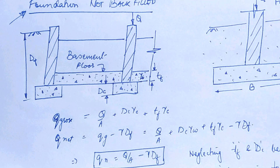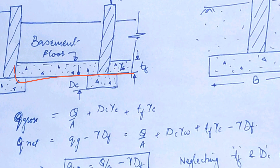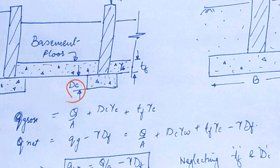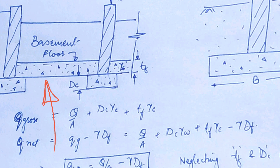Q_gross here is equal to the total load Q acting over area A, plus DC·γC — the weight of the concrete bed, where DC is the depth of the concrete bed footing and γC is the unit weight of the concrete — plus DF·γC for the weight of the concrete bed of thickness DF. This is the total load coming on the soil, from which the reaction force from beneath arises.